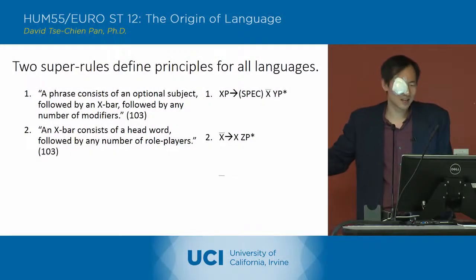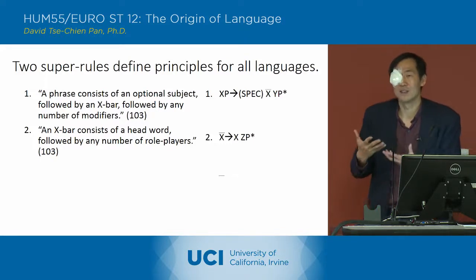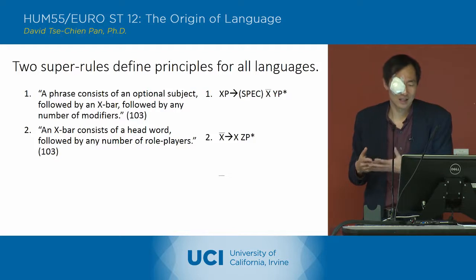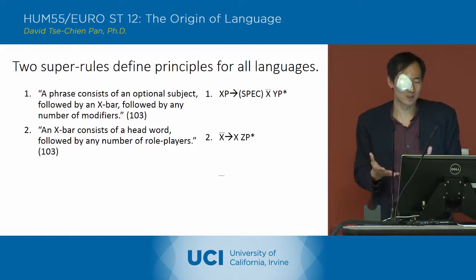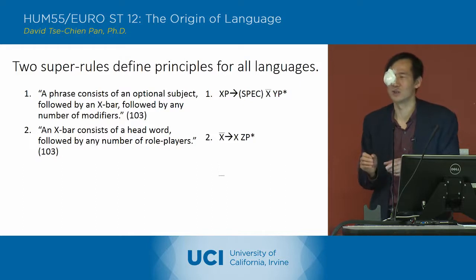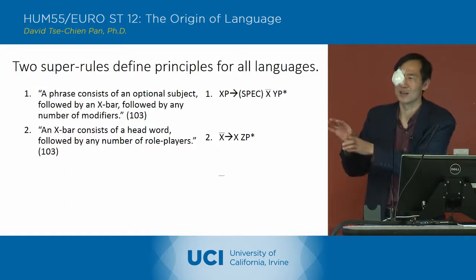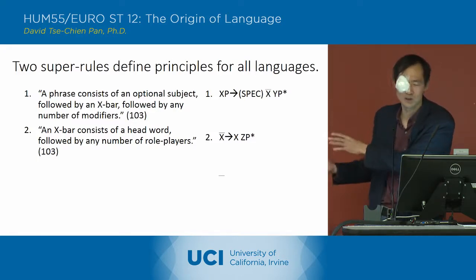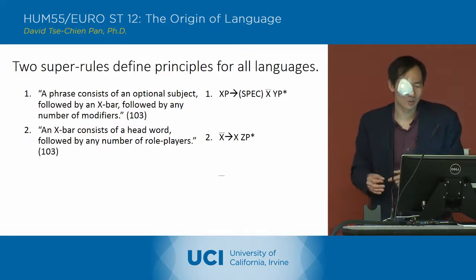You don't have to memorize this exactly. There are these two super rules that define the principles for all languages. Basically, Chomsky's idea is that all languages can be described using these two principles. The first principle is that a phrase consists of an optional subject followed by an X-bar. An X-bar is basically a noun phrase or a verb phrase followed by any number of modifiers — the noun bar or the verb bar.